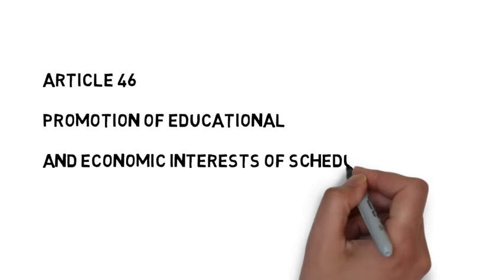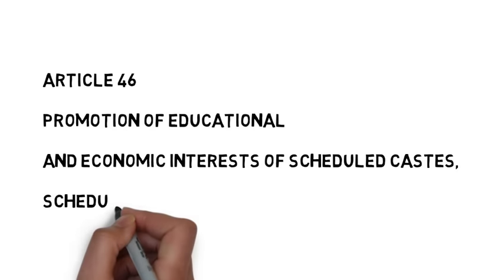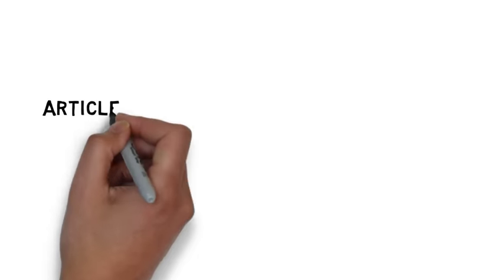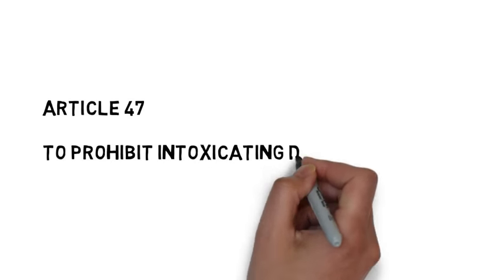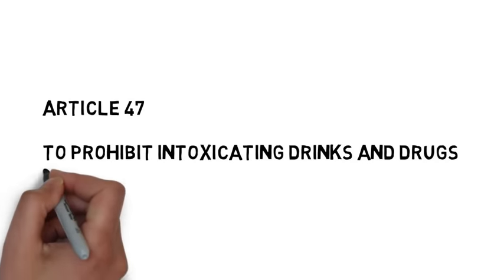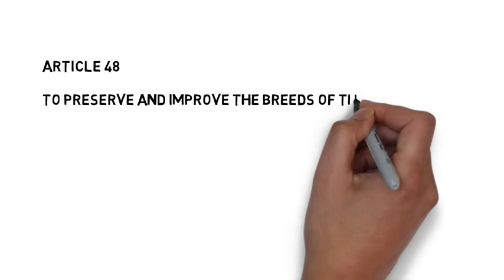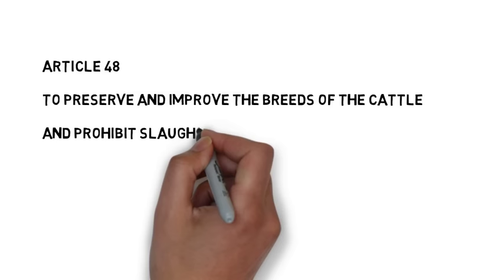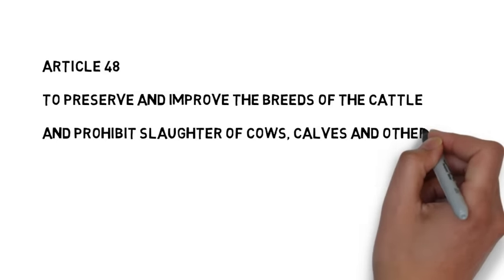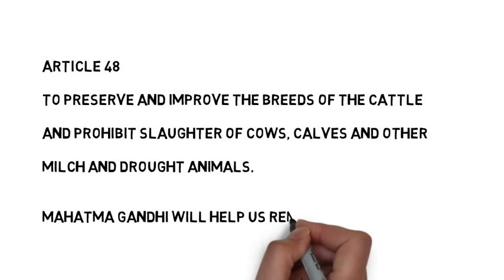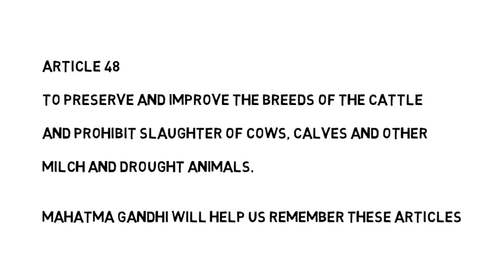Article 46 provides for promotion of educational and economic interests of Scheduled Castes, Scheduled Tribes, and other weaker sections. Article 47 aims to prohibit intoxicating drinks and drugs that are injurious to health. Article 48 is to preserve and improve breeds of cattle and prohibit slaughter of cows, calves, and other milch and draught animals.